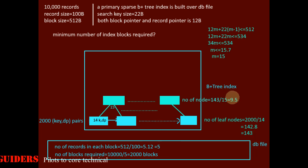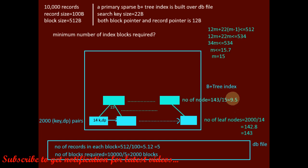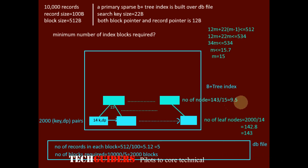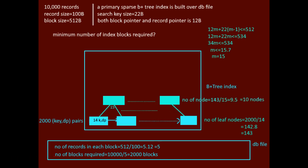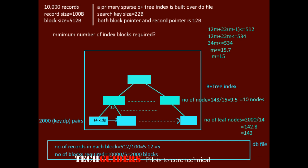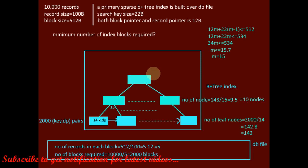So 9 nodes are not enough — with 9 nodes there would be only 135 leaf nodes covered, so for the remaining leaf nodes, one more node is required. Thus a total of 10 nodes are required at the next level. We take the ceiling value, not the floor. Moving up to the next level: the root can have a maximum of 15 children, and here there are only 10 nodes. Thus one more level suffices and it will be the root node.